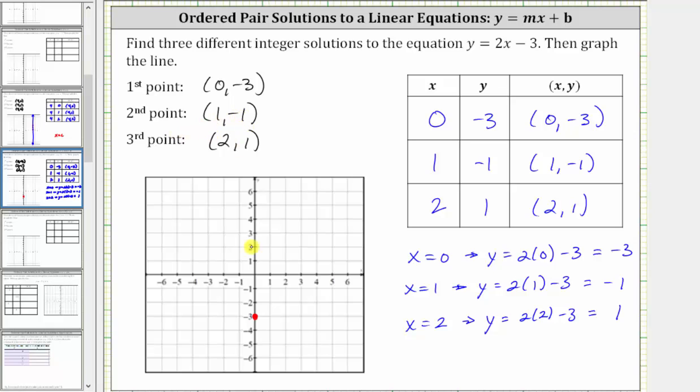Next, we have (1, -1). From the origin, we move right 1 and then down 1. Next, we have (2, 1). From the origin, we move right 2 and up 1.